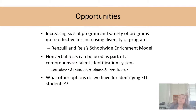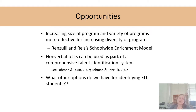Some of the opportunities for these students: one is something more like in-class differentiation — basically increasing the size and variety of programs you're going to offer. English learner students, no matter how you identify them, won't necessarily be ready for the same kinds of enrichment and gifted programming that other students are ready for because of that language barrier. So one opportunity is to provide enrichment in the regular classroom.